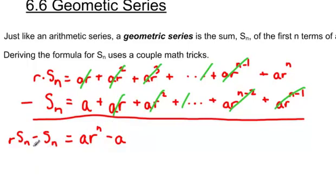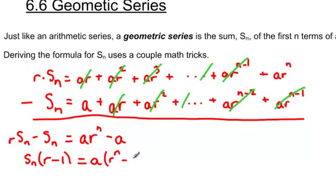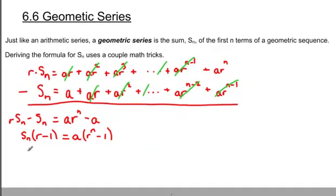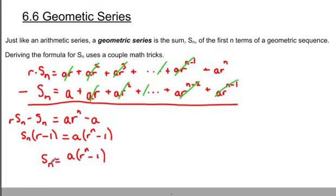Now I'm going to factor both sides. On the left side, Sn factors out, leaving r minus 1. On the right side, a factors out, leaving r to the exponent n minus 1. To get Sn by itself, I divide both sides by r minus 1, giving us: Sn equals a times (r to the exponent n minus 1), divided by (r minus 1). That is the formula for the sum of a geometric series.